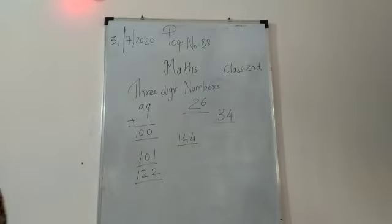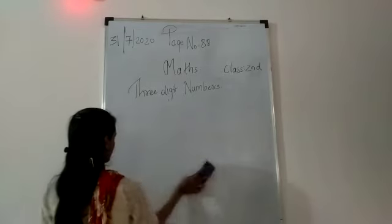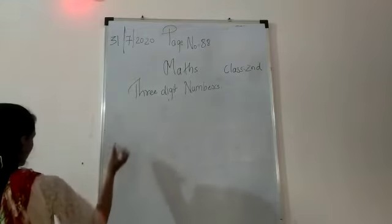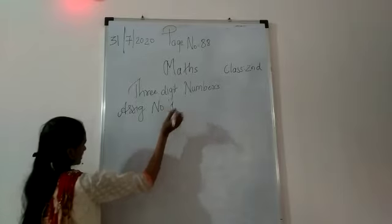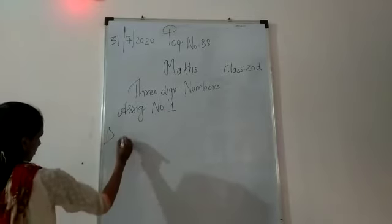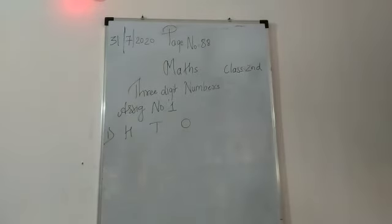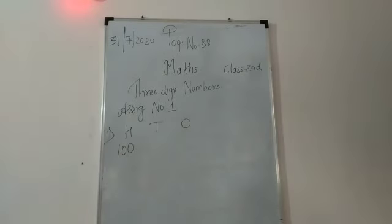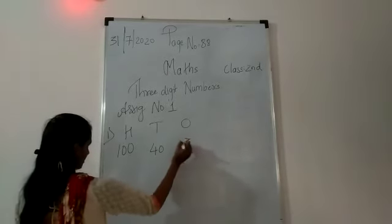So let's go to assignment number 1. They have given us 100s, 10s, and 1s. You need to count how many sticks are there and write it in the 100s, 10s, and 1s. So in the first picture there is 100. Then you count the sticks — there are 40 sticks. And then in the 1s there are 3 sticks.